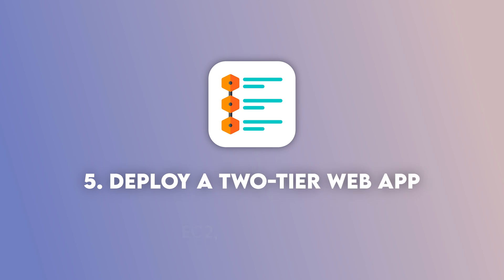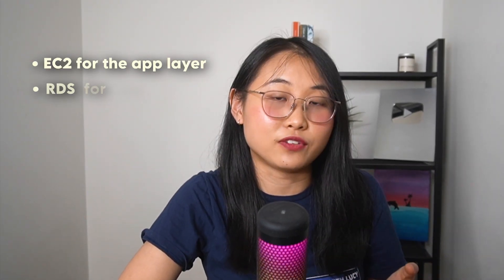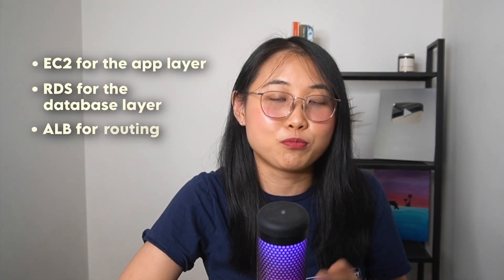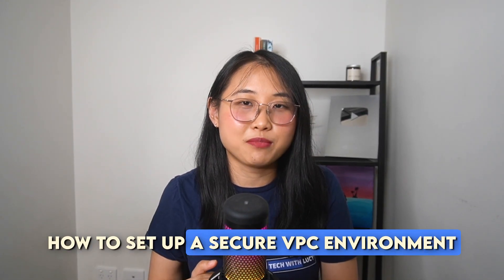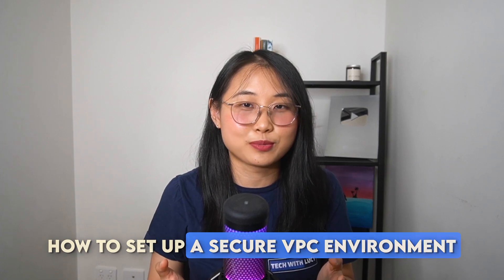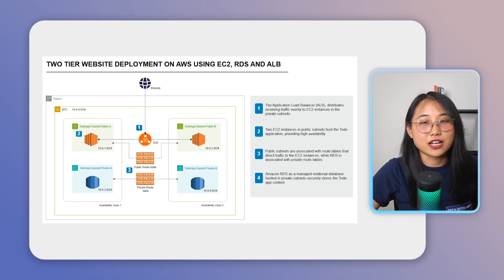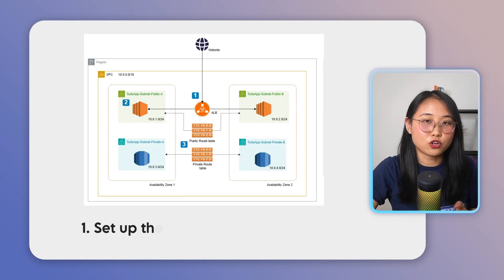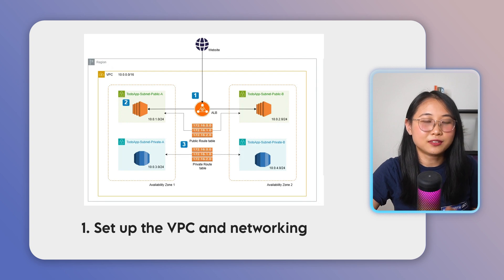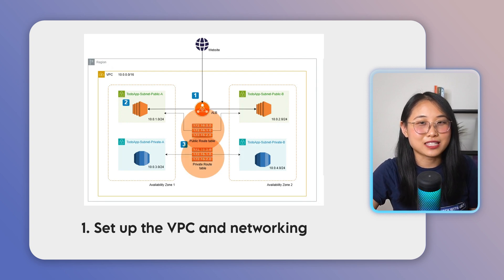Our fifth and final project is to deploy a two-tier web application using EC2, RDS and an application load balancer. This is a very common architectural design where you'll have EC2 for the app layer, RDS for the database layer, and an application load balancer for routing. This project also teaches you how to set up a secure VPC environment with proper subnetting and security groups. Here's the architectural overview and how you'll build it step by step. First, set up the VPC and networking — you'll need to create a custom VPC with public subnets for EC2 and private subnets for RDS.